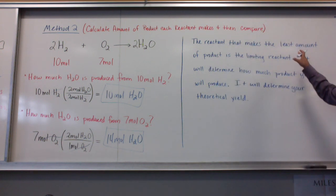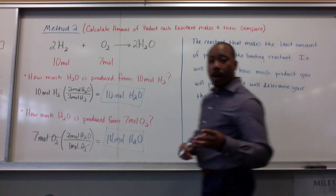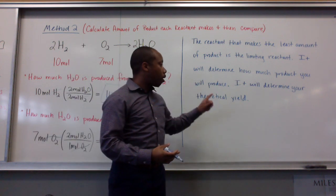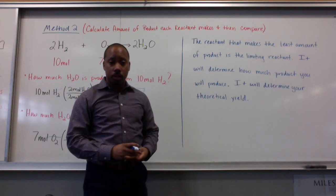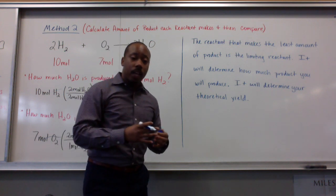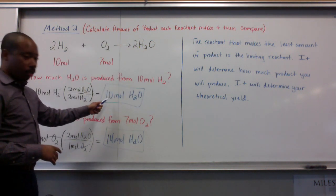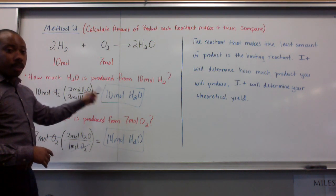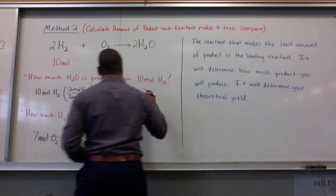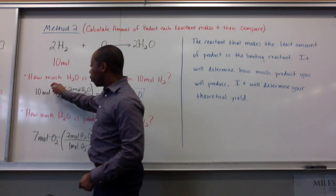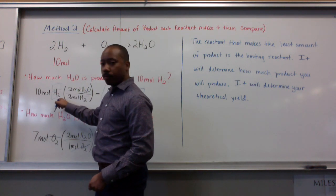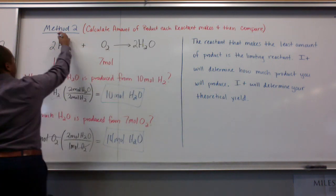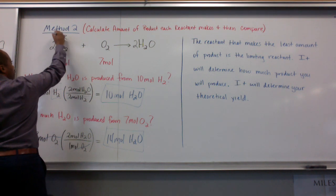Now, the reactant that makes the least amount of product is your limiting reactant. It will determine how much product you will produce. It will determine your theoretical yield. So, the reactant that creates the least amount of product is 10 moles of H2O. The reactant that creates this is your limiting reactant. So, that means H2, which you started with. Your 10 moles of H2 is your limiting reactant. So, in this case, H2 is our limiting reactant.